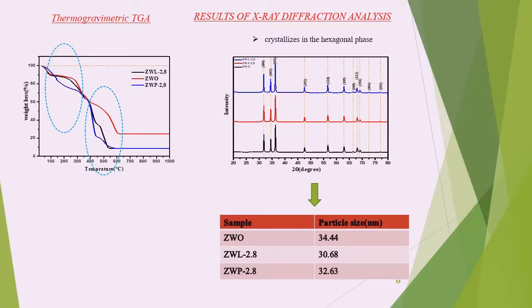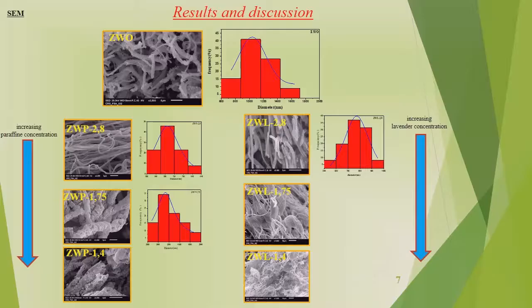The calculated crystallite size does not show much difference between the samples despite their distinctive morphology, with the lowest size for zinc oxide with lavender at concentration 2.8.